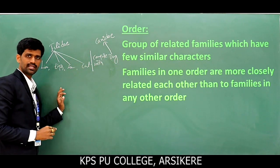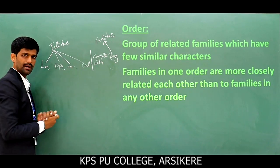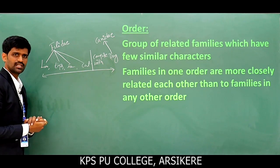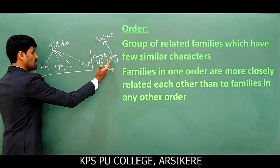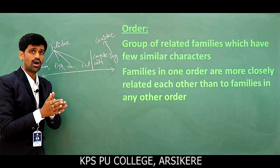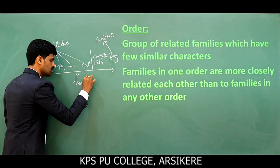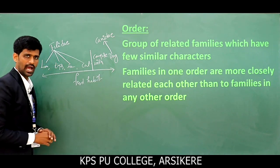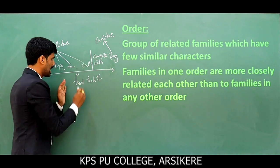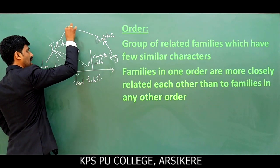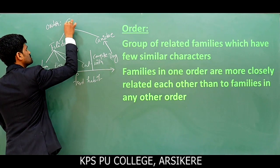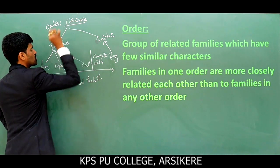But dog comes under the family Canidae. If we observe, there is no similarity between these families. But all of them — lion, tiger, leopard, cat, and dog — show a common food habit. Because they all show a common food habit, Felidae and Canidae are coming under the order Carnivora.